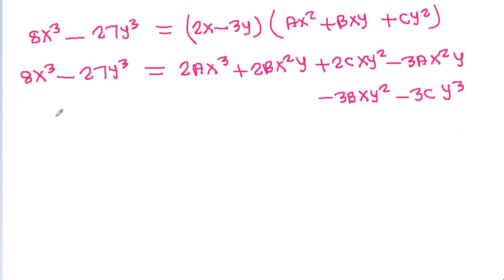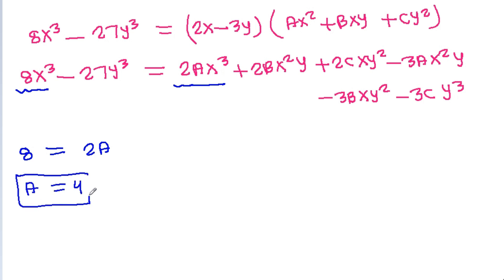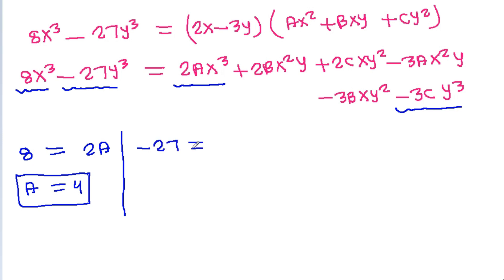On the left-hand side we have 8x³ and on the right-hand side we have 2ax³, so 8 = 2a, giving a = 4. On the left-hand side we have -27y³ and on the right-hand side we have -3cy³, so -27 = -3c, giving c = 9.